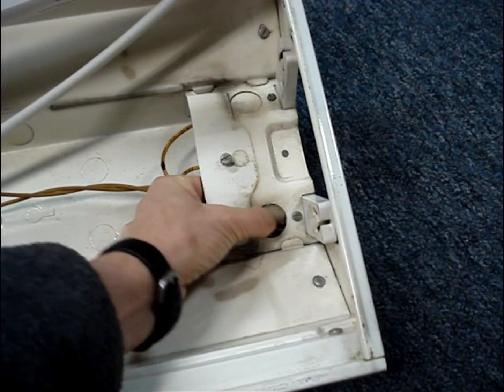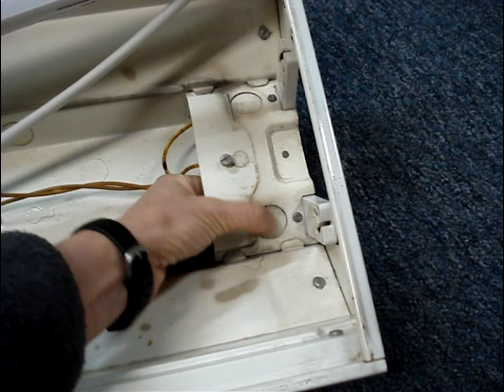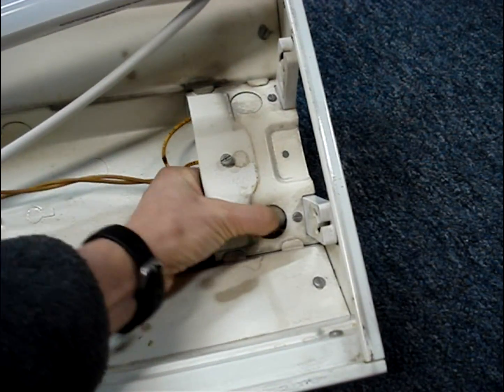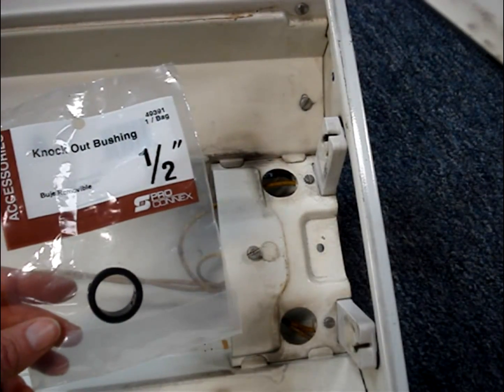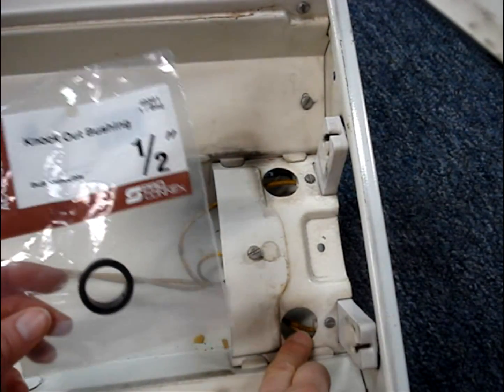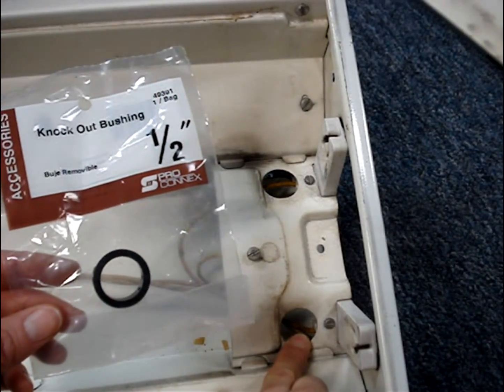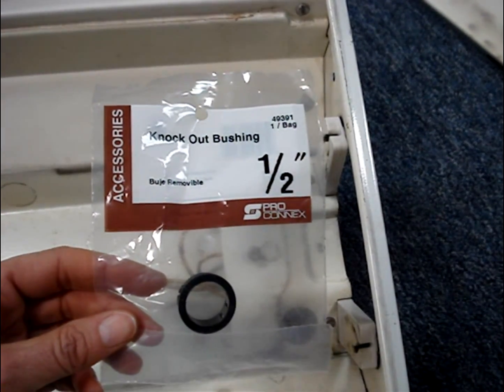If you have knockouts, break them out. Be careful, there might be sharp metal edges. To prevent the sharp edges around the knockouts from damaging the wire, install knockout bushings.